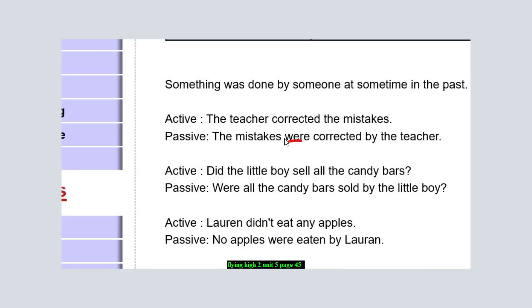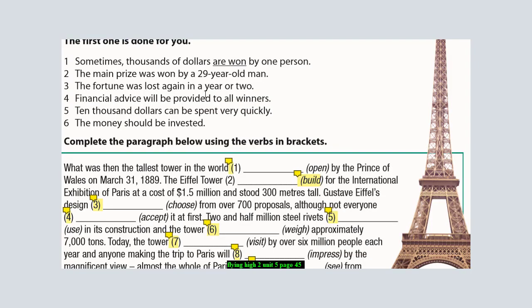'The mistakes were' - we use 'were' because it's plural. If it's singular we use 'was'. Then 'corrected' as it is, then the agent which is 'by the teacher'. Sentence number four: 'Financial advice will be provided to all winners.' Notice here he used 'will', so we have a third use which is for the future.